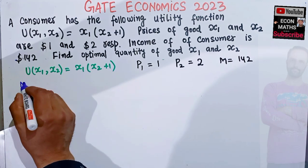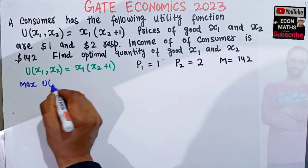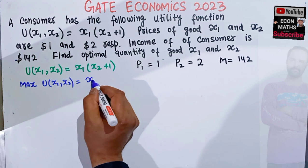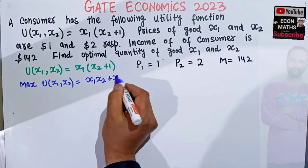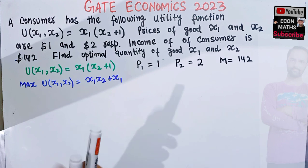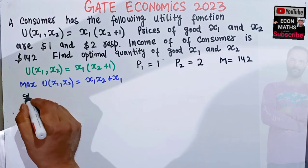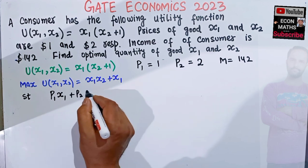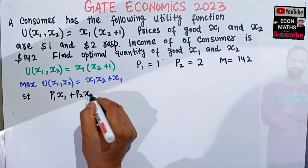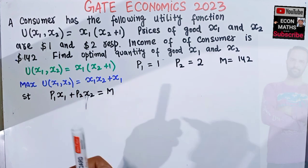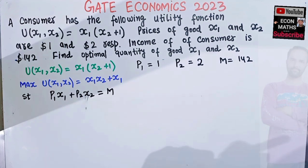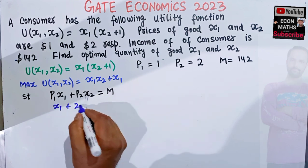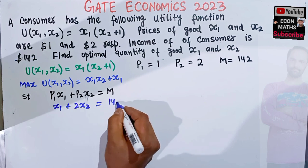We want to maximize the utility function U(x1, x2) = x1·x2 + x1, subject to the budget constraint. The budget constraint is: price of good one times units of good one plus price of good two times units of good two equals income. So that gives us x1 + 2x2 = 142.